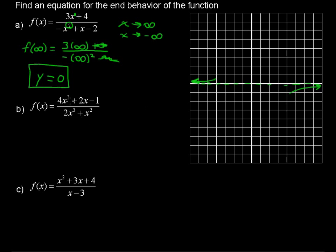Okay, the next one. 4x to the third plus 2x minus 1 over 2x to the third plus x squared. When the degree of the numerator is the same as the degree of the denominator, that is if the greatest exponents in the numerator and the denominator are the same,